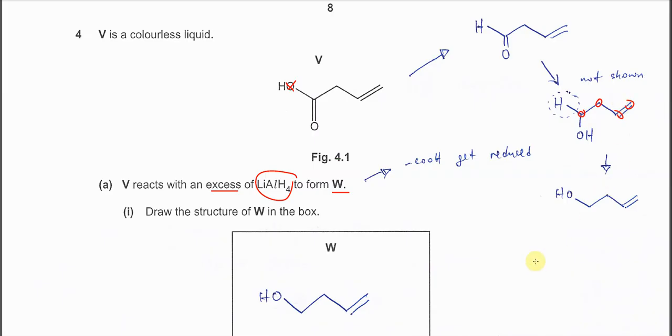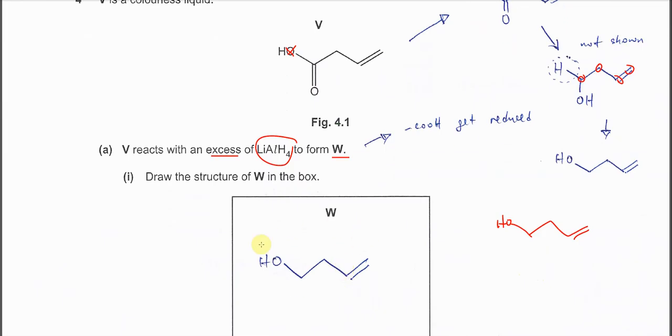So we just start to draw this. 1, 2, 3, 4 carbons, put a double bond, after that you just put another bonding OH. This is how you draw the structure. So that's why this is W.